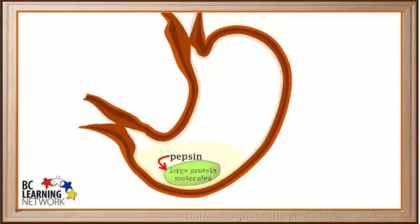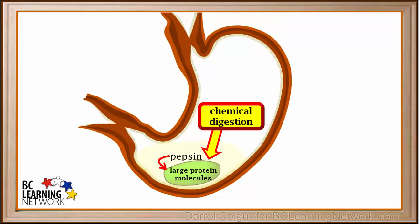HCl reacts with pepsinogen to form an enzyme called pepsin. The enzyme pepsin breaks down large protein molecules into smaller protein molecules. This is a type of chemical digestion that takes place in the stomach, and the enzyme pepsin speeds up the chemical breakdown of large protein molecules.